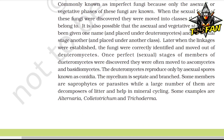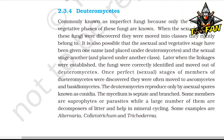Deuteromycetes, commonly known as imperfect fungi, are so called because only the asexual or vegetative phase of these fungi is known. When the sexual form was discovered, they were moved into the classes they rightly belong to. The deuteromycetes reproduce only by asexual spores known as conidia. The mycelium is septate and branched. Some members are saprophytes or parasites, while a large number are decomposers of litter and helpful in mineral cycling. Some examples are Alternaria, Colletotrichum, and Trichoderma.